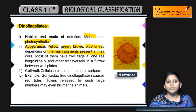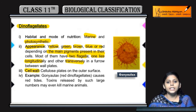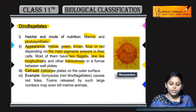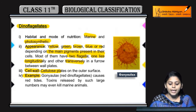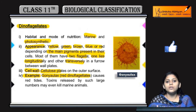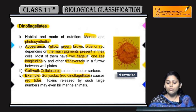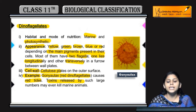Most dinoflagellates also bear flagella, mainly two in number — one lies longitudinally and other transversely. Cell wall ki baat karein toh cell wall composed hoti hai cellulose plates se. Iska ek main important example hai Gonyaulax, jisse red dinoflagellate bhi bolte hai. Red isliye bolte hai because they are known to cause red tides in ocean or water. Yhe release karte hai kuch toxins, jo water animals ke liye bahut hi harmful hote hai, jiski wajah se water animals die bhi karte hai.